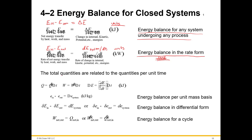These are the total quantities related to the quantities per unit time. Q equals Q-dot dt — that's heat transfer. W is work dot dt, and dE equals dE. These are the energy balance per unit mass basis, and then energy balance in differential form — because you've got that differential force — and then energy balance for a cycle: work net out equals Q net in.